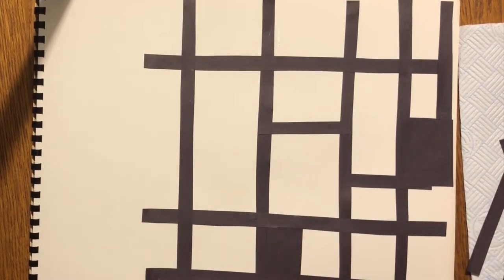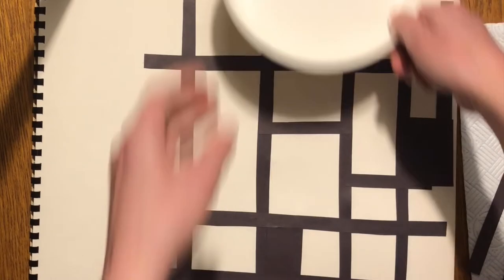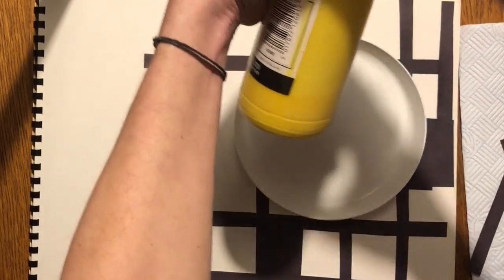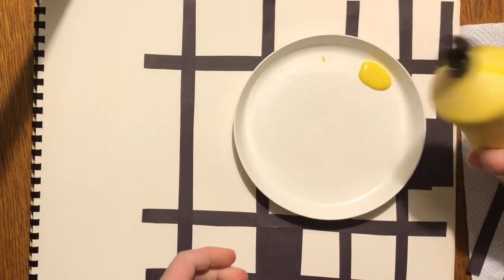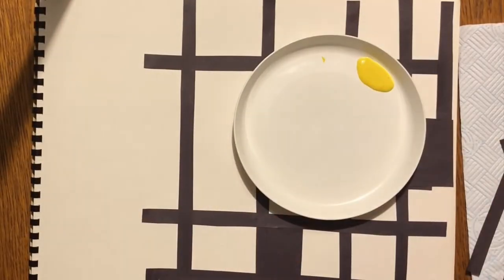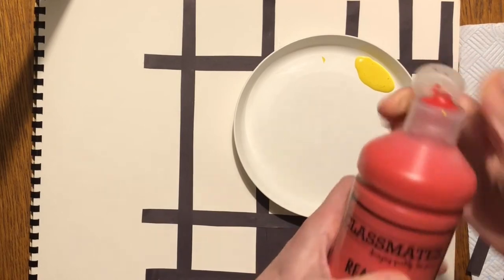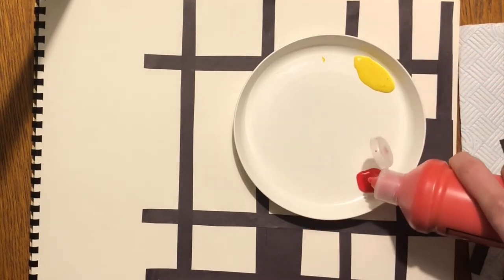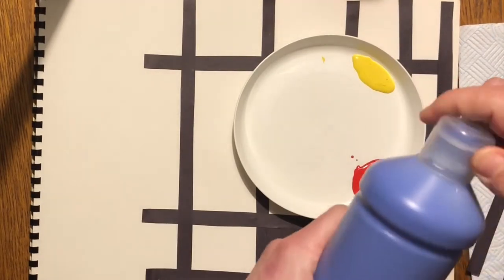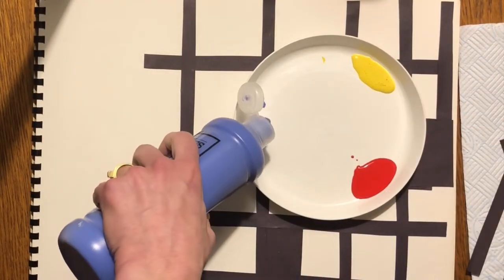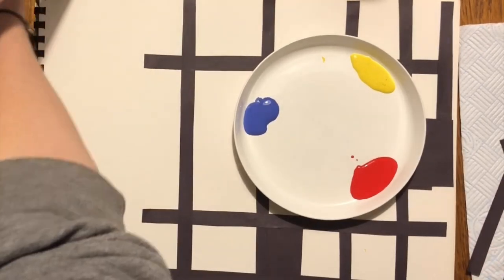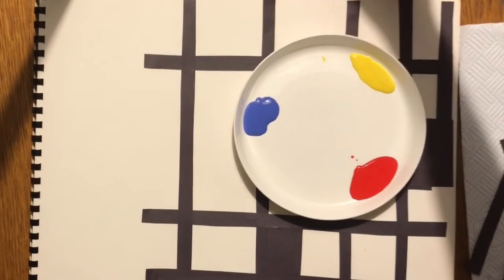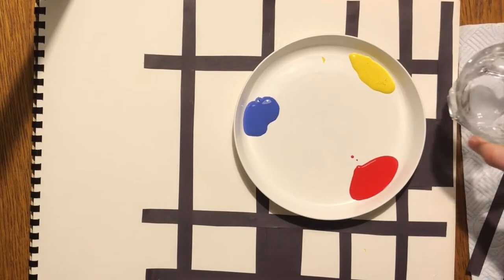Now you're ready to paint. Pour out your primary colours: red, yellow, and blue. Have some water ready to clean your brush.